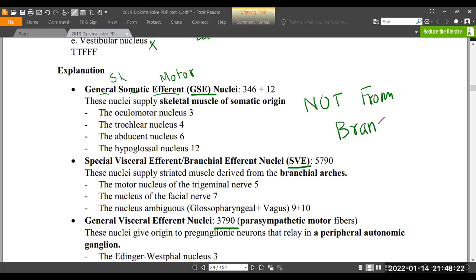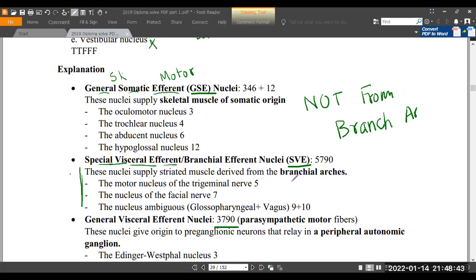This is important because muscles from the branchial arches that are supplied are known as special visceral efferent. So it could be easy: nerves 5, 7, 9, 10, and the branches that supply muscles from the branchial arch are special visceral efferent. General somatic efferent are the skeletal muscles in the head and neck region that are not from the branchial arch. These muscles supplied are general somatic efferent - eye muscles and tongue muscles.